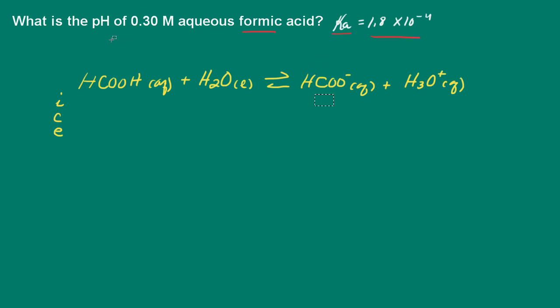So what I'm going to do is set up my equilibrium ICE table, and let's see what we have here. Initially we have 0.3 molar formic acid. Of course, initially we would have 0 formate ion and 0 hydronium ion.